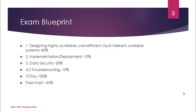Here is the blueprint and the distribution of the weightage. The very first domain is designing highly available, cost-efficient, fault-tolerant, scalable systems, which consists of 60 percent. Then we have implementation and deployment, which carries 10 percent. Then we have data security — there is a white paper included in this which we will be discussing in upcoming videos — and the weightage is 20 percent.